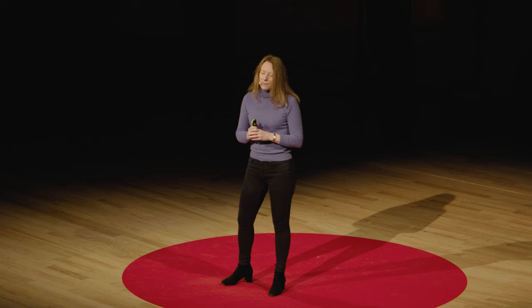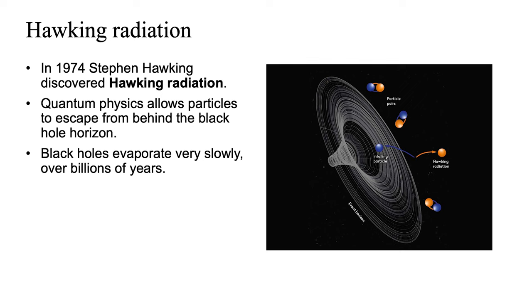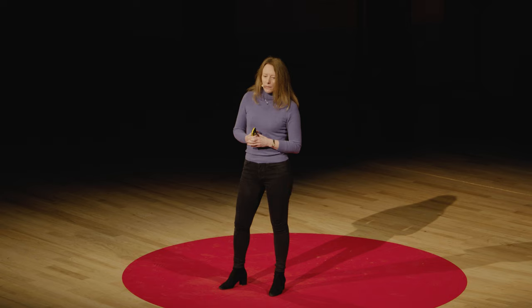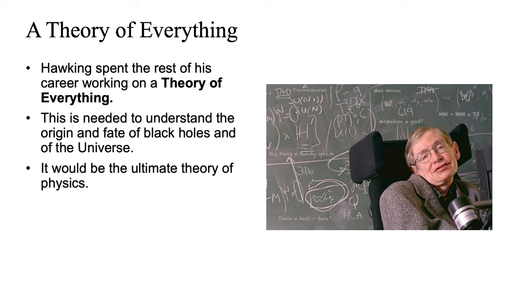Stephen's biggest discovery — commemorated in Westminster Abbey where he's interred — was Hawking radiation. What he showed is that when you take into account quantum effects, things can actually get out from the black hole. The quantum world is very strange — there's a small probability of things happening due to quantum effects. The particles can come out really, really slowly — they evaporate over billions of years. This is the thing he was most proud of, and yet again it leads into understanding a theory of everything.